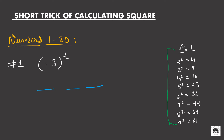For the first blank, we just square the first digit of this number, which is 1. So the square of 1 is equal to 1. Now for the last blank, we will just square the last digit of this number, which is 3. So 3 squared is equal to 9.